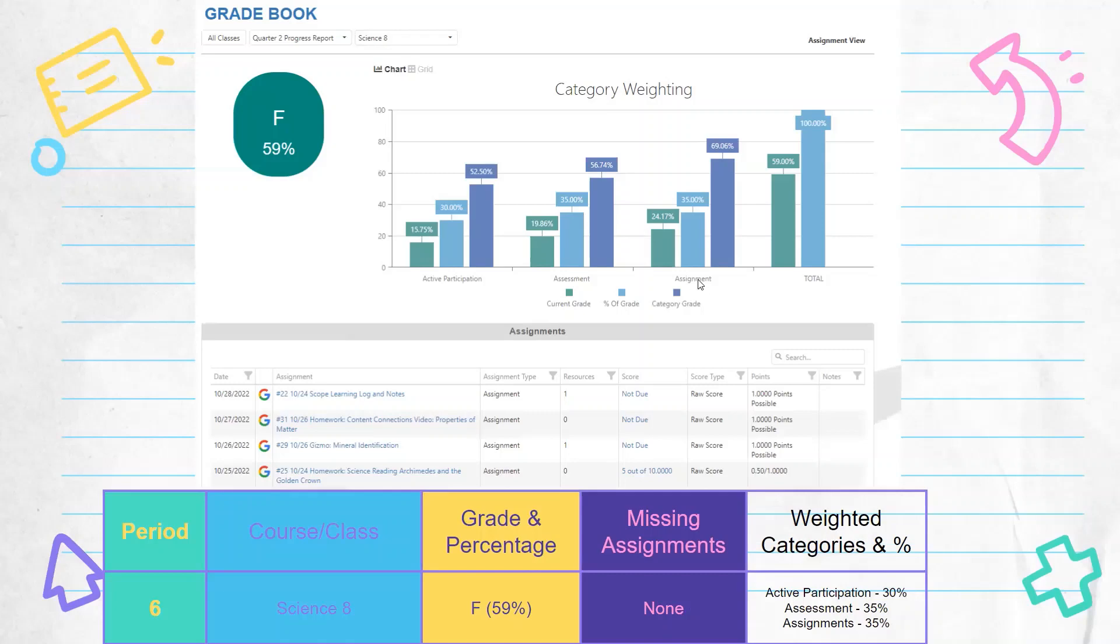And if we remember, this light blue is the percent of the student's grade. So 30% active participation. This student only has about 15% of those points turned in and as a result has a 52% or F in the active participation category. So although the student doesn't have any missing assignments because they're not all the points are turned in for each assignment, the grade is at an F.